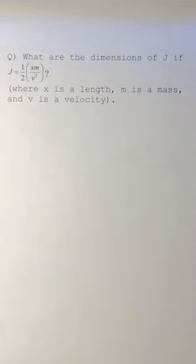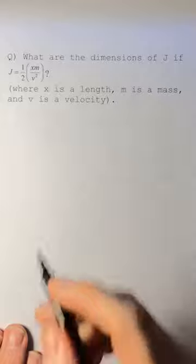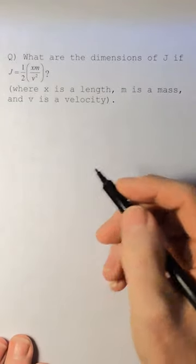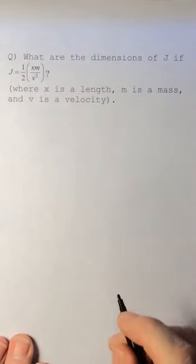This question asks what are the dimensions of J if J equals one-half XM over V squared, where X is a length, M is a mass, and V is a velocity. The first thing to realize is that one-half is dimensionless, so we just ignore it.